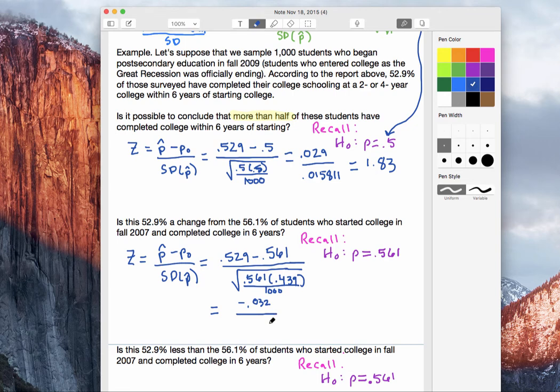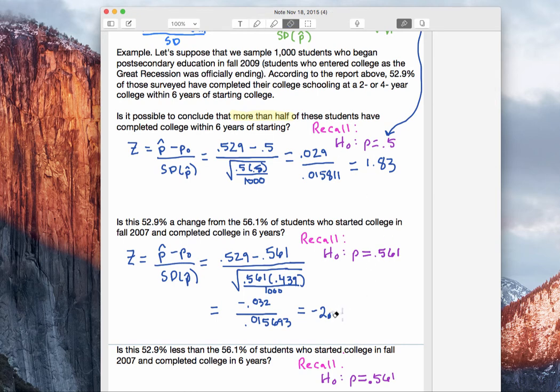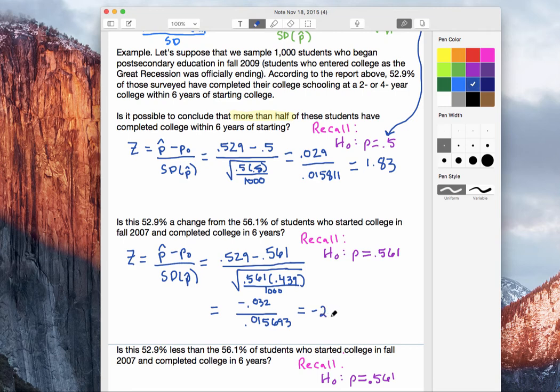The denominator, so that sampling distribution width, is 0.015693. So kind of close to what it was before. These standard deviations, they are differing because our p-naughts, our p-zero, is differing. Before it was 0.5, and now it's 0.561, so those denominators are going to be different. And lastly, we have to do some division. Take the -0.032, divide it by the 0.015693, and we get negative 2.04. So our sample proportion of 52.9% is just over two standard deviations below the hypothesized proportion of 56.1%.